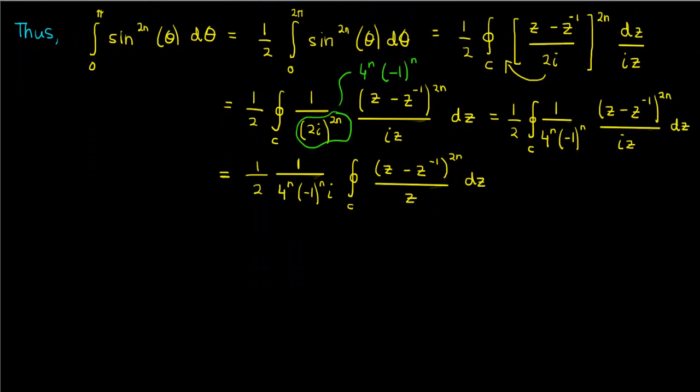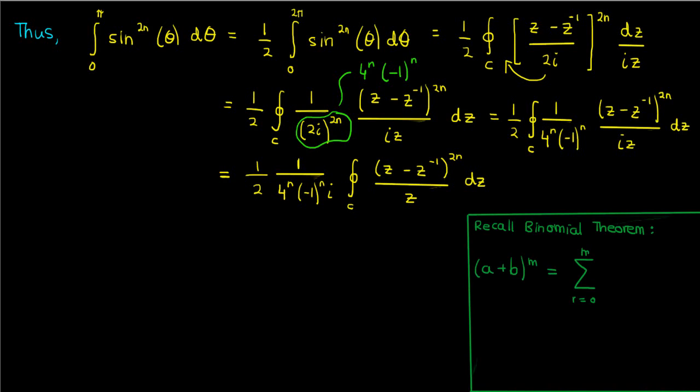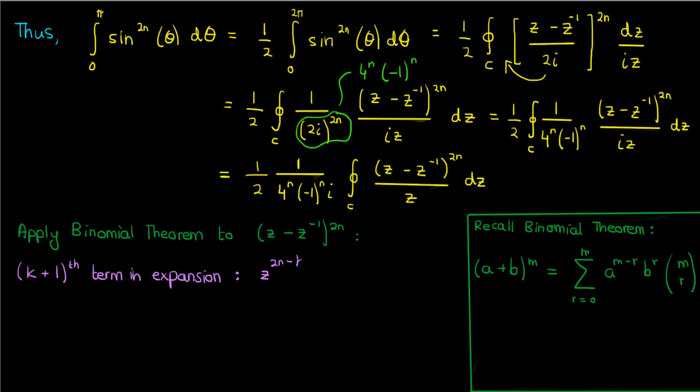The reason we want to use the binomial theorem is that using the binomial theorem will ultimately give us an expansion of this expression, which we can use to find the residue of this integrand, which we'll use to apply the residue theorem. So let's recall the binomial theorem, which states that a plus b to the power m is the sum from r equals 0 to m of a to the m minus r times b to the r times m choose r. So if we apply the binomial theorem to the numerator of our integrand, to the numerator of the function we're integrating, we'll find that the k plus 1 term of this expansion is z to the 2n minus k times negative 1 to the k times z inverse to the power k times 2n choose k.